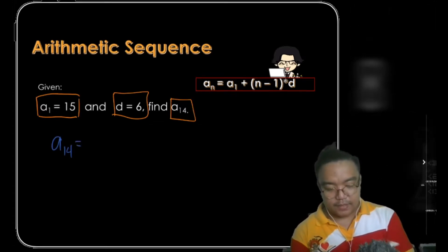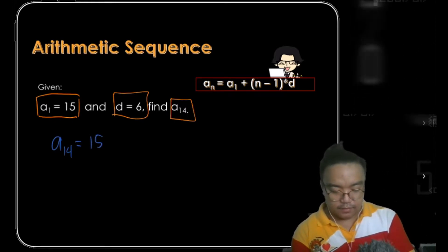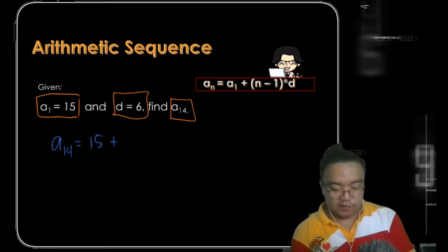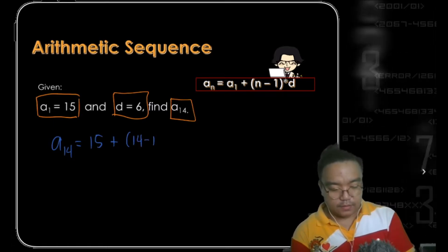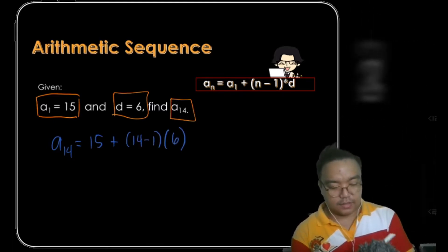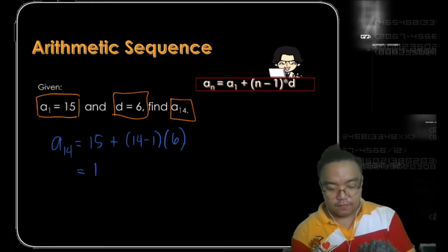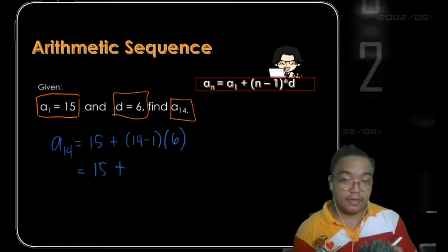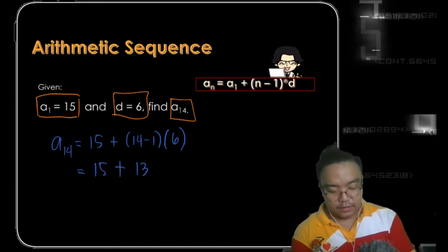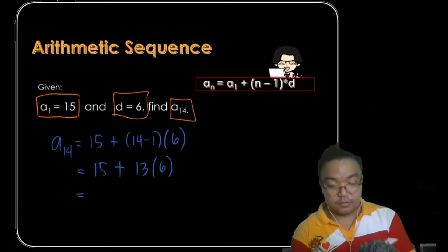Looking for a sub 14 will be as easy as plug and play. A sub 14 equals a sub 1, which is 15, plus the position 14 minus 1 times the common difference 6.